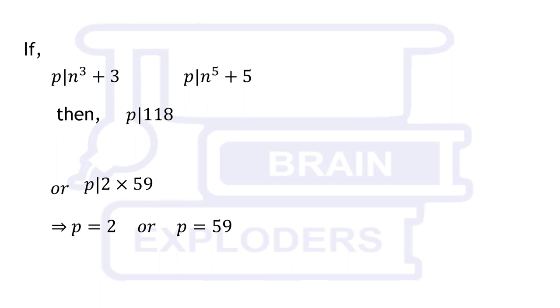One should not get confused that why this doesn't follow for all n. Our first assumption is that p divides n cubed plus 3 and fifth power of n plus 5. Therefore it is possible in many cases that p doesn't divide one or both of these.